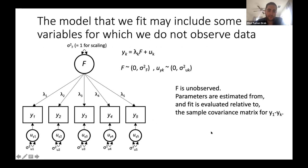We can extend this beyond two regression associations. With many associations, we can include unobserved latent variables — for example, with observed variables Y1 through Y5 all correlated because of some unobserved third variable that influences them all but hasn't been directly measured.